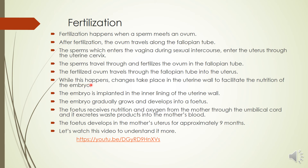While this is happening, changes take place in the uterine wall. As you saw in the previous video, the uterine walls become thick — this is to facilitate the nutrition of the embryo. The embryo is implanted in the inner lining of the uterine wall, meaning the embryo goes and stays in the uterine wall. The embryo then gradually grows and develops into a fetus — a fetus means a tiny baby.